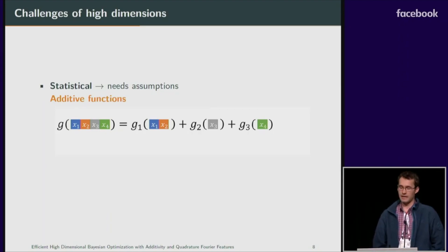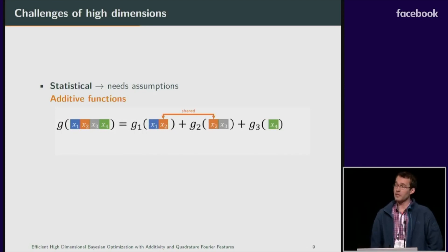The assumption that we make in this work is that the function that we are trying to optimize is additive, meaning that it decomposes into a sum of functions where each of these functions depends only on a small subset of variables. Sometimes we even allow for overlap between these variable groups. And as a measure of complexity, we define the so-called effective dimension, which is the size of the largest group.